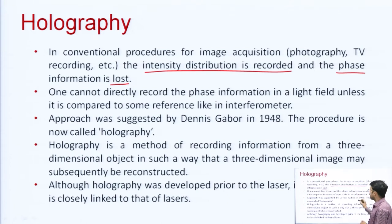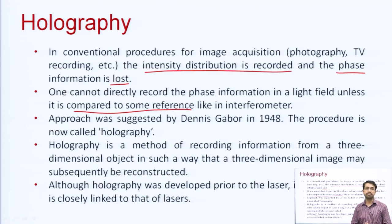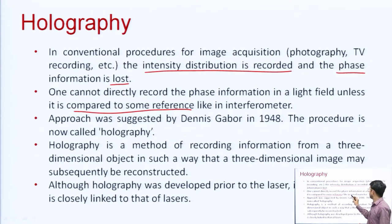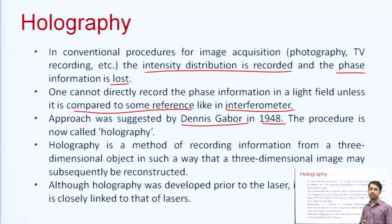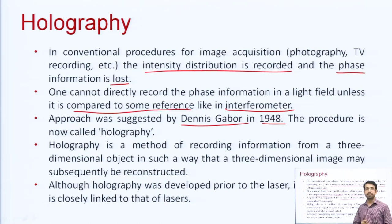Phase information in a light field can be captured as in interferometers, where we divide monochromatic light into two beams — one reference and one test beam — as seen in spectrophotometers or Rayleigh's refractometer. We have to generate an interference pattern to record the information of phase. This approach was first suggested by Dennis Gabor in the year 1948, and he called this procedure holography. It is a method of recording information from a three-dimensional object.